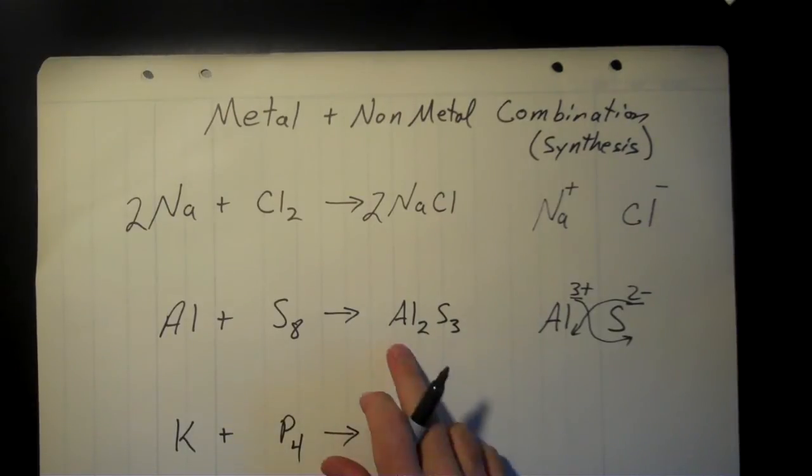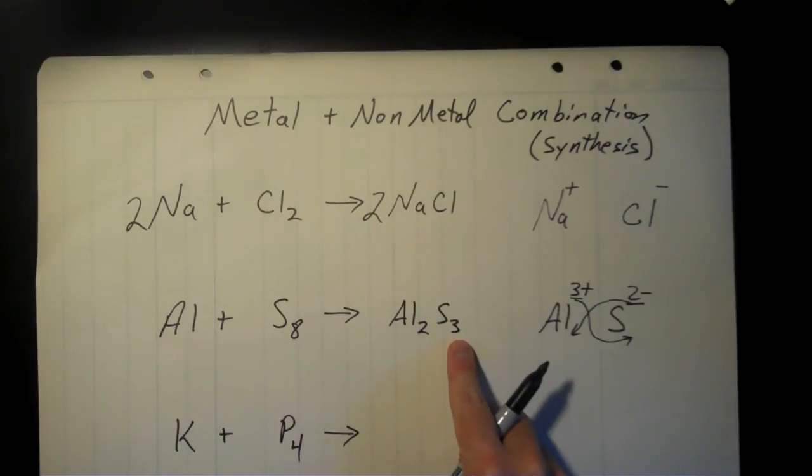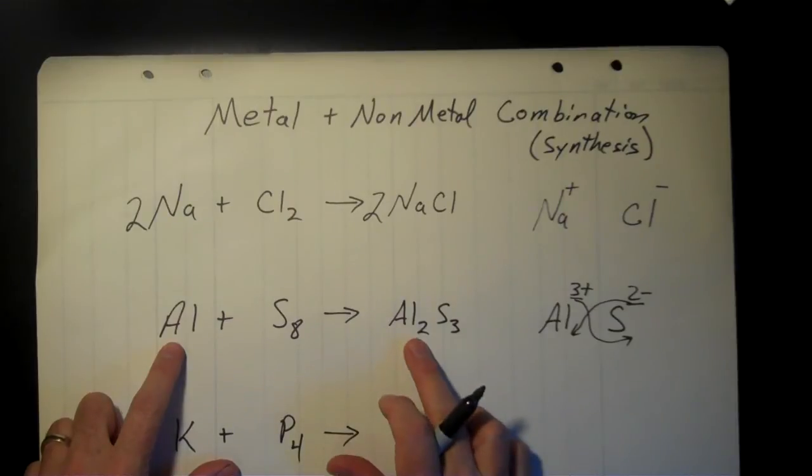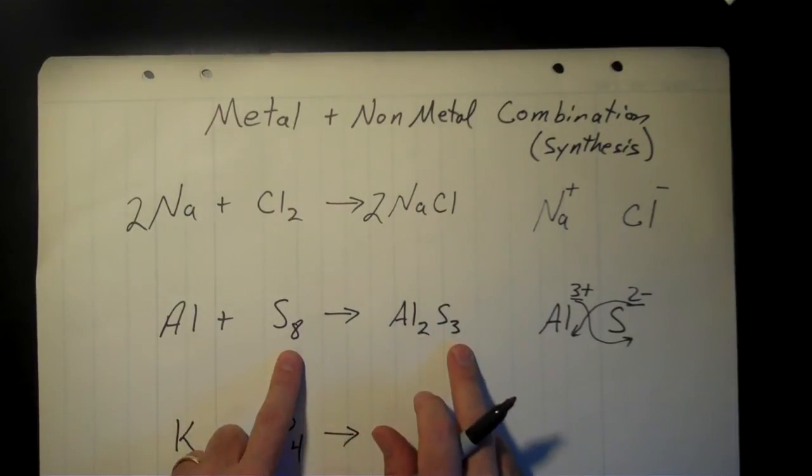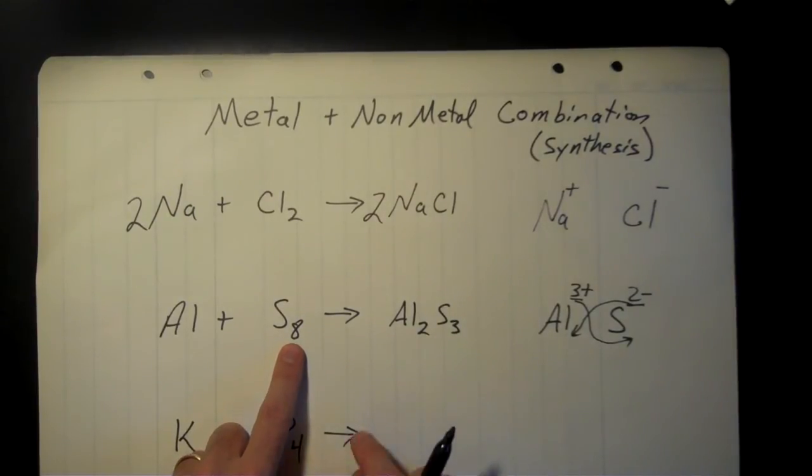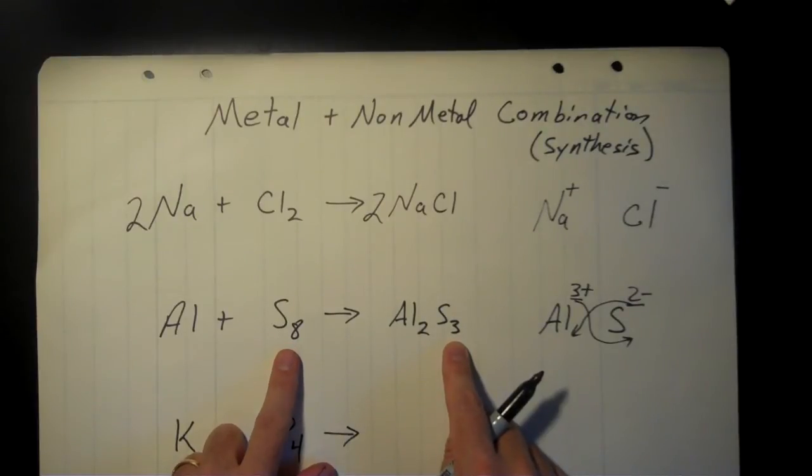The positive and negative charges, I get a plus 6 total from the two aluminums and a negative 6 total from the three sulfurs here. When I take 3 times 2 and 2 times 3, it gives me a plus 6 and a minus 6. Now we can balance this out. I could start with the aluminum. I need two aluminums here to match the two aluminums there, but the sulfur is going to take a little bit more work. So I'm actually going to start with the sulfur here. I've got eight sulfurs here and three here, and so I need to bring those both up to the same number.